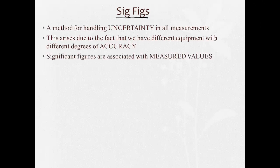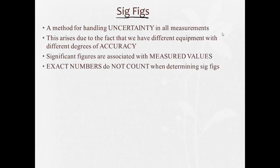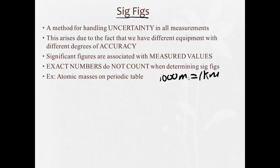Significant figures are associated with measured values only — things that are exact numbers don't count. For example, atomic masses on the periodic table can be treated as exact numbers. Similarly, 1,000 meters equals 1 kilometer, or 1 inch equals 2.54 centimeters — we don't worry about significant figures here because these values are not measured; they're exact.